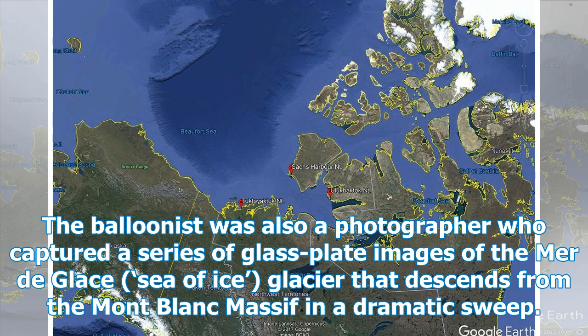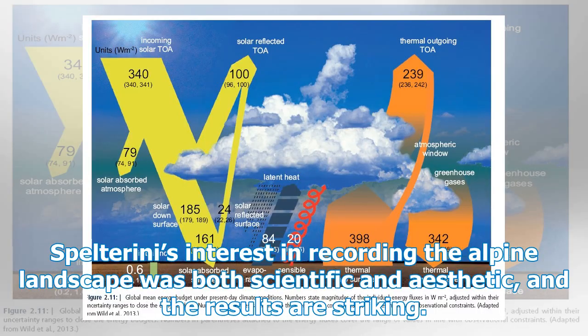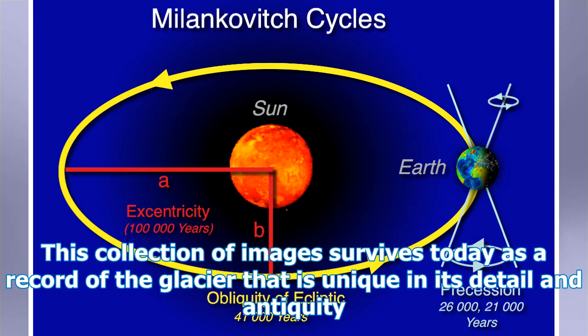The balloonist was also a photographer who captured a series of glass-plate images of the Mer de Glace — Sea of Ice — glacier that descends from the Mont Blanc massif in a dramatic sweep. Spelterini's interest in recording the alpine landscape was both scientific and aesthetic, and the results are striking. This collection of images survives today as a record of the glacier that is unique in its detail and antiquity.